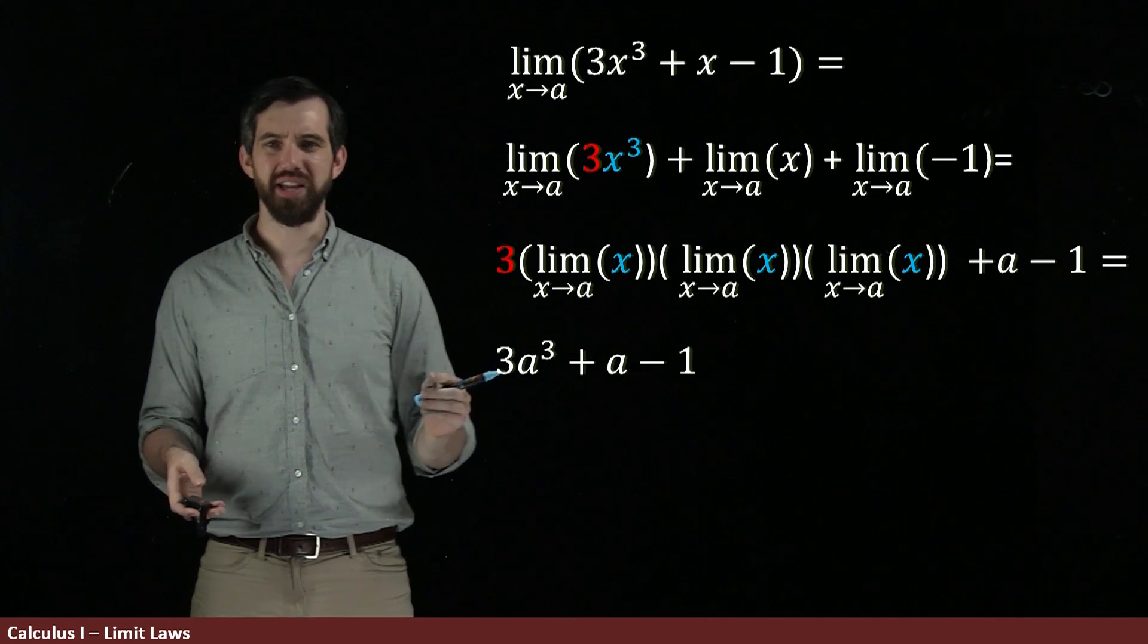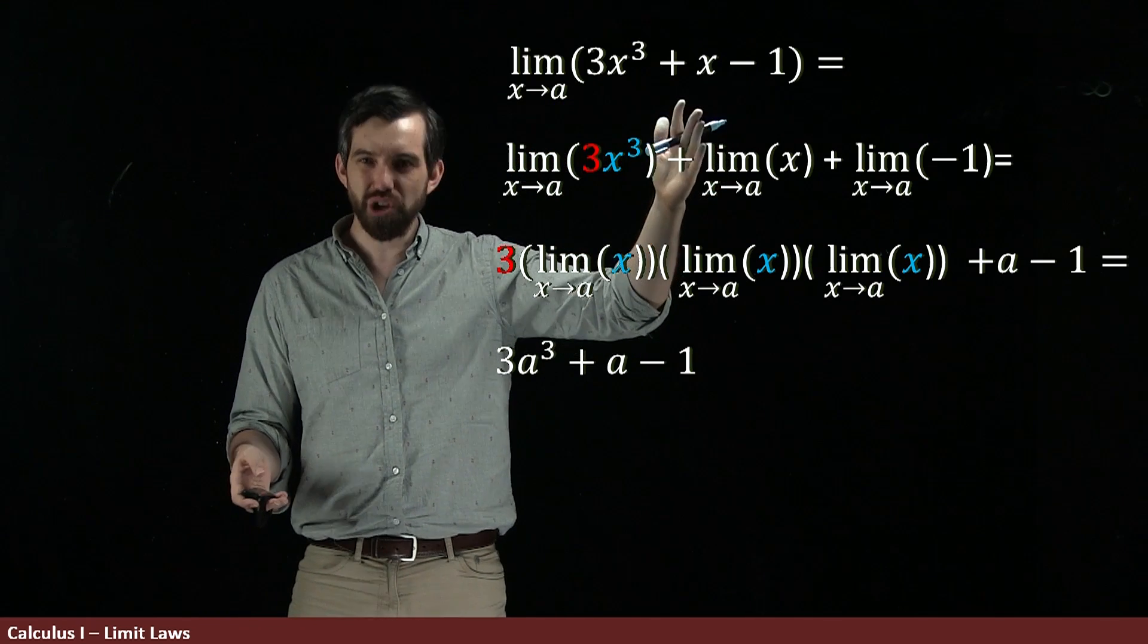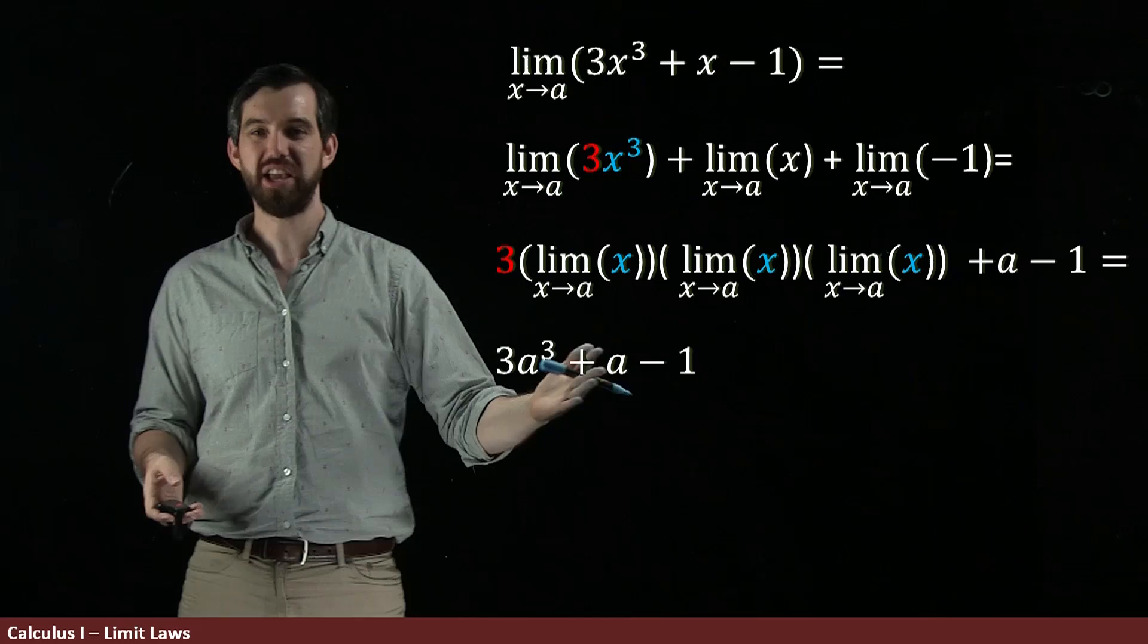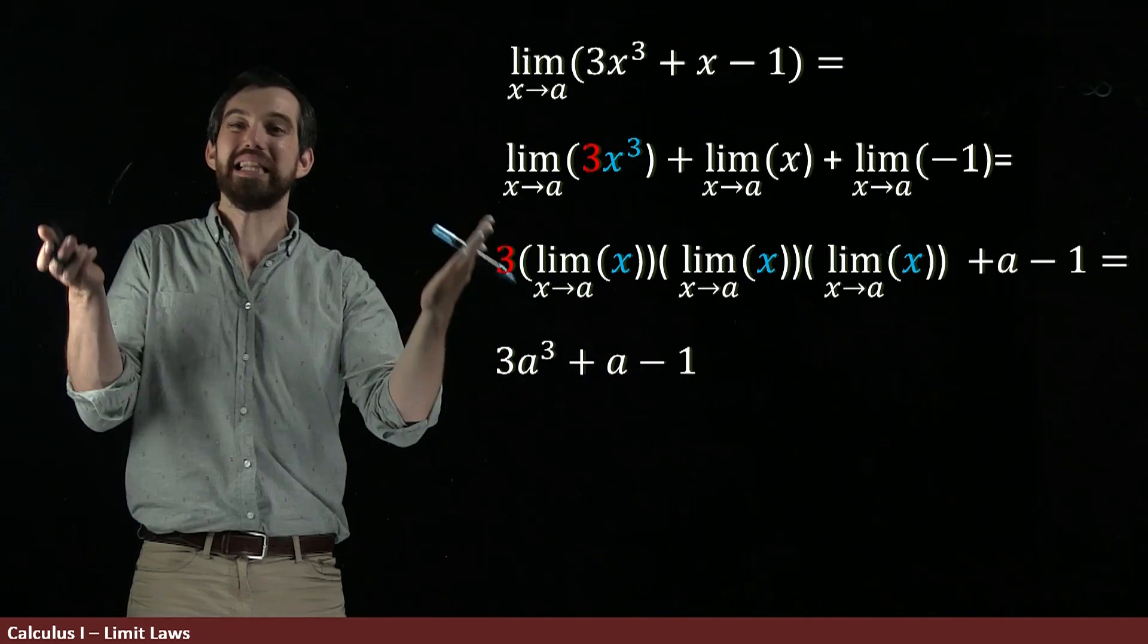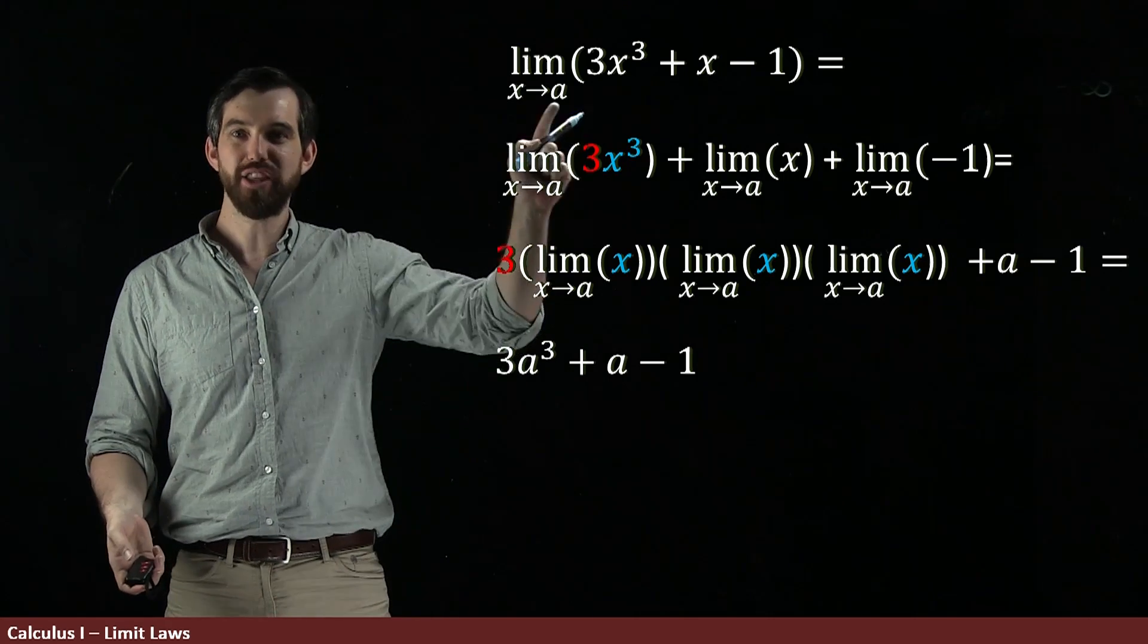In other words, what we've done here is, we just took this a that was there, and we just plugged it in. 3x cubed plus x minus 1 became 3a cubed plus a minus 1. So, polynomials are really easy. There's nothing to do with the polynomial. You don't have to graph it. You just plug the value in.